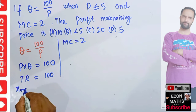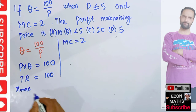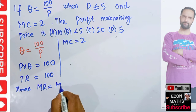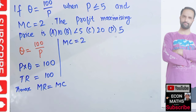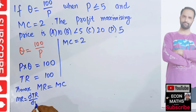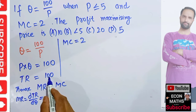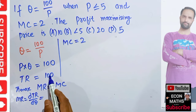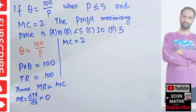We know the profit-maximizing condition is that marginal revenue should equal marginal cost. Marginal revenue is the derivative of the total revenue function — specifically, MR equals dTR/dQ. Since total revenue is a constant (100), its derivative with respect to output is equal to zero.